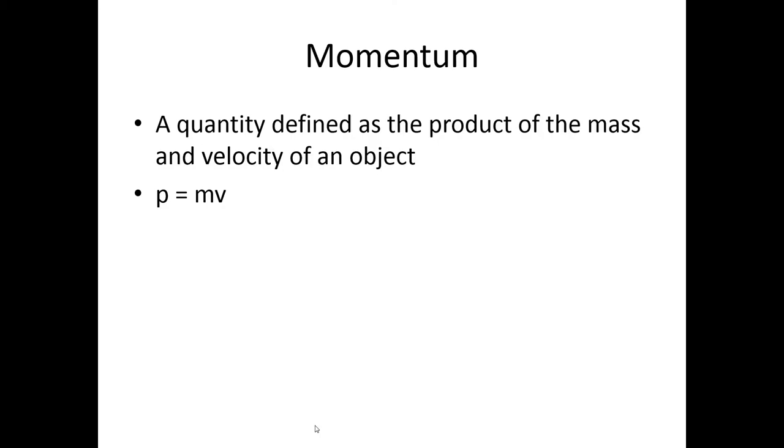Let's start off by defining the word momentum. Momentum is a quantity defined as the product of the mass and velocity of an object. The equation for momentum is going to be P, which stands for momentum, and then M for mass, and then V for velocity.